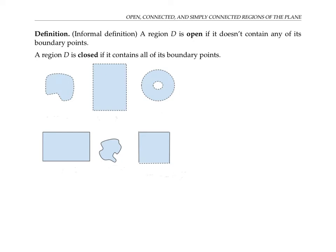In the figures below, the first region — I'll call it A — is open. It doesn't contain any of its boundary points. The dotted line here means the edge or boundary is not included. The second region B is also open; it doesn't contain any of its boundary points either because of that dotted line. The third region C is also open.